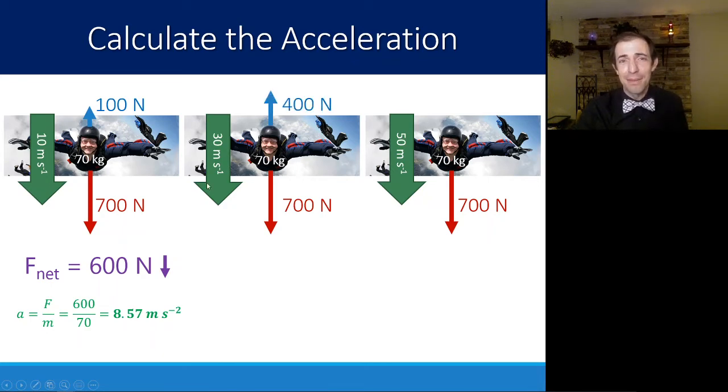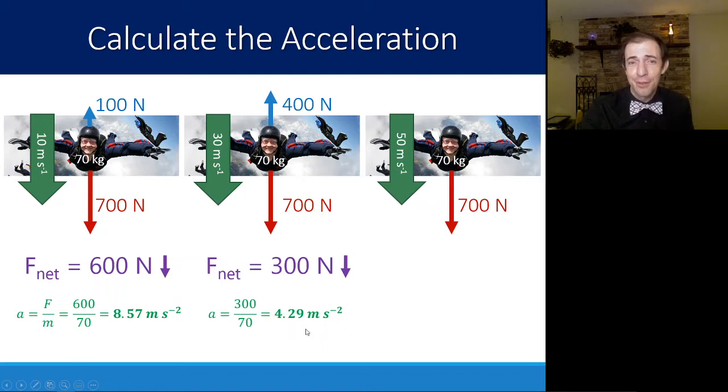If we go faster still, about 30 meters per second, which is about 65 miles per hour, we get up to 400 newtons of force pushing back, which means my net force is now 300 newtons, which means my acceleration has also gone down. 300 newtons divided by the mass of 70 gives me 4.29. You can imagine, as we continue along this path, eventually we're going to be going so fast that the air resistance pushing back is the same as the force of gravity pulling down.